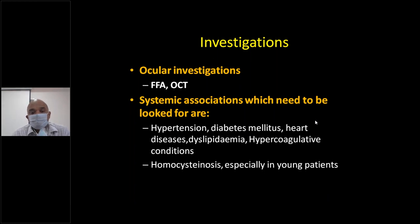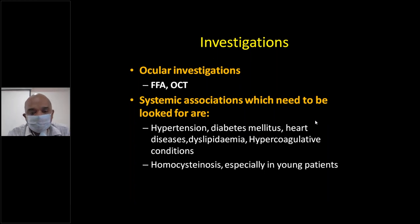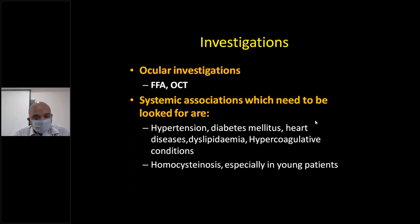Investigations include FFA, optical coherence tomography, and fundus fluorescein angiography. You also need to evaluate systemic associations: hypertension, diabetes, heart diseases, dyslipidemia, hypercoagulative conditions, and homocystinuria — mainly in young patients. These have to be ruled out. A thorough cardiovascular examination is very important in case of BRVO.